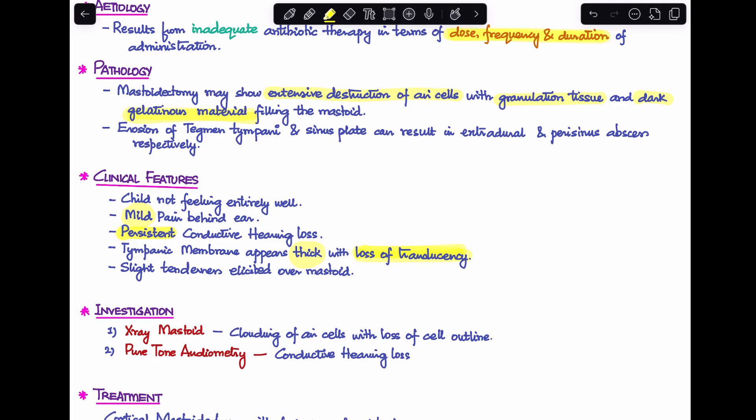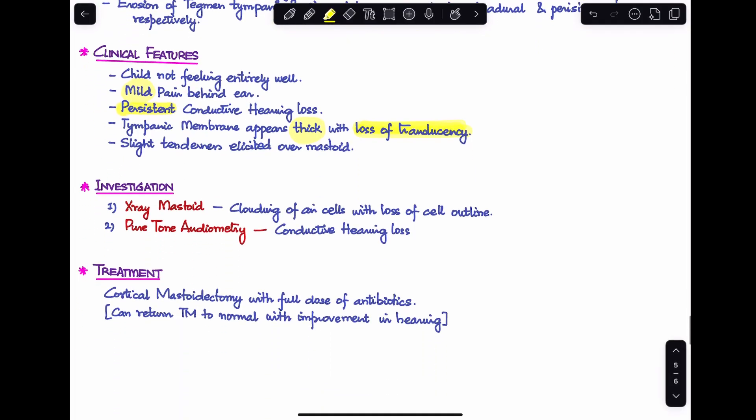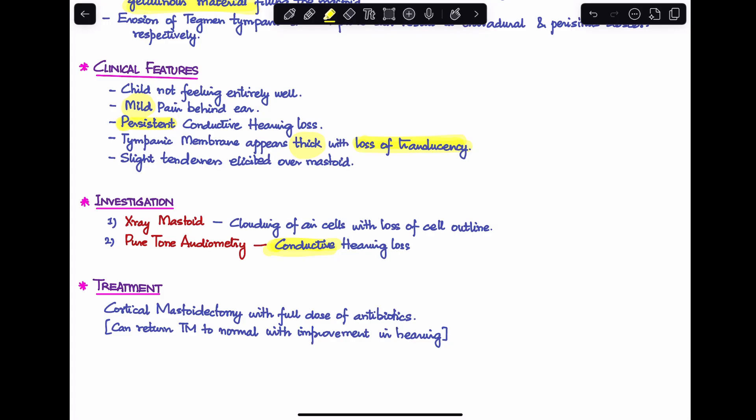Coming to investigation, on performing X-ray mastoid you will find clouding of air cells with loss of cellular outline. Pure tone audiometry will show conductive hearing loss. Last, you can treat it with cortical mastoidectomy with a full dose of antibiotics. Because the tympanic membrane usually doesn't have a perforation, it can return the tympanic membrane to normal with improvement in hearing. So this has a better prognosis than acute mastoiditis.